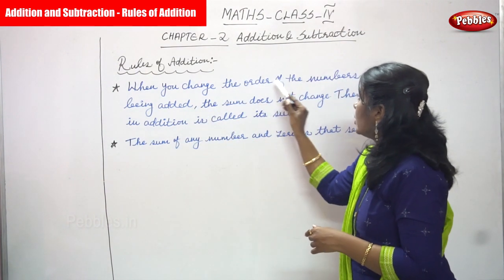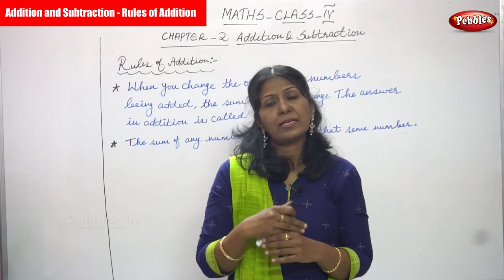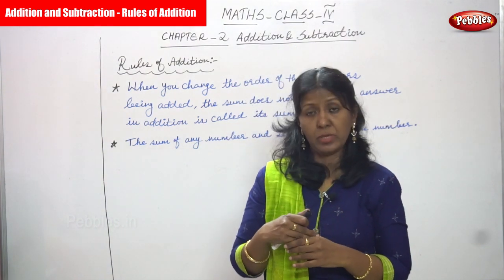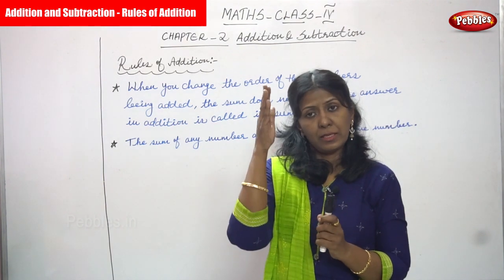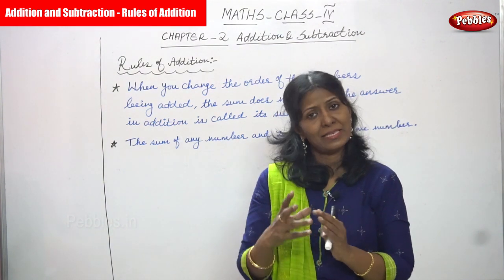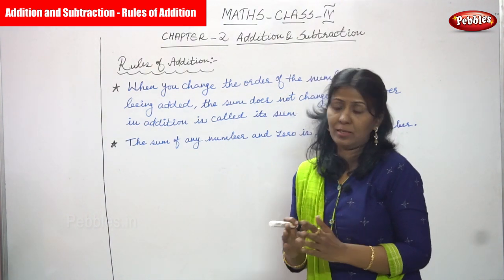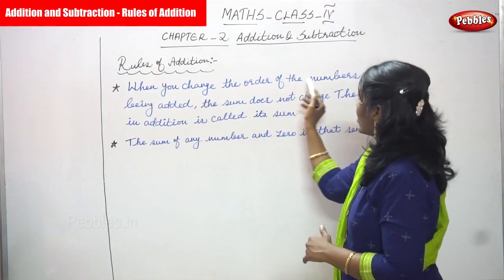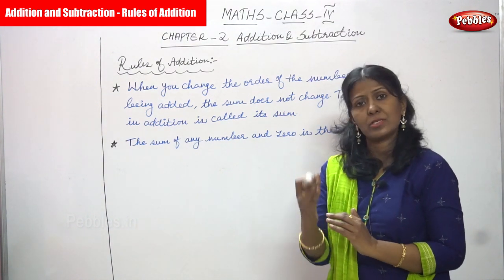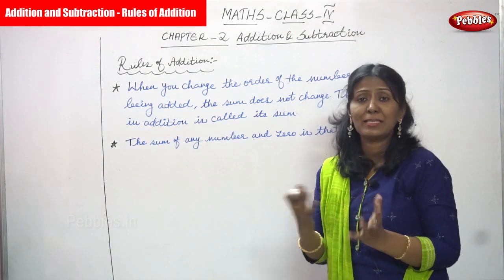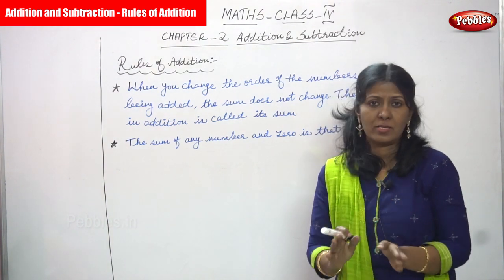When you change the order of the numbers being added — for example, the first number is 45 and the second number is 50 — you can add 45 with 50, or 50 with 45. Both directions, upward or downward, if you add the numbers and change the order, there is no problem — you can get the same answer. Whatever numbers you add together, the answer will not be changed.